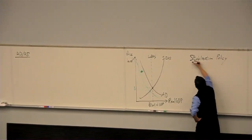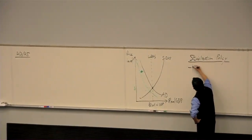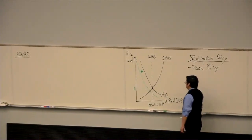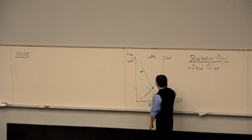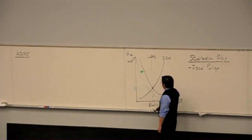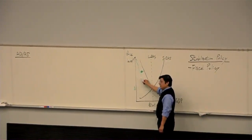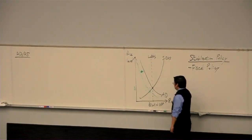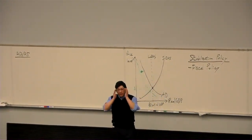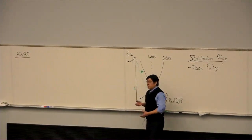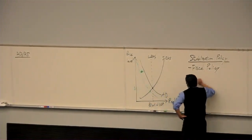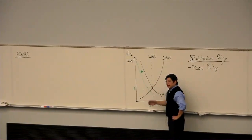Last class, we looked at one set of tools of stabilization policy known as fiscal policy. The idea of fiscal policy was that, instead of waiting for the self-correcting mechanisms to kick in, government spending is one of the elements of aggregate demand. So the government boosts government spending to push the demand curve back. In addition, there are taxes and transfers - those are also things on the government budget. They don't directly affect aggregate demand, but if you change taxes or transfers, you're changing disposable income, and thus indirectly pushing aggregate demand back.